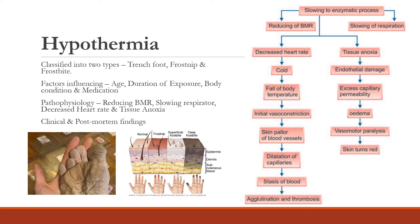The term hypothermia is used when an individual's body temperature is below 95°F or 35°C. This occurs when the loss of body heat exceeds heat production. The normal body temperature is around 36°C to 37°C when measured orally; however, it may vary from individual to individual depending on age.